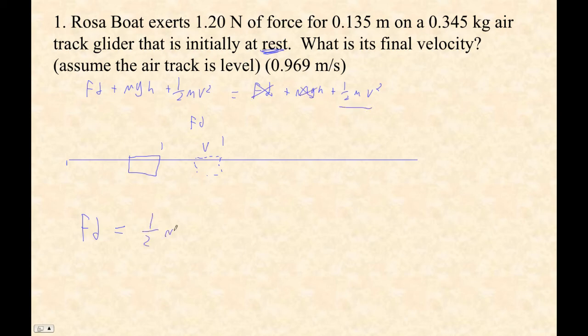Now we just plug numbers in, right? So 1.2 times 0.135 equals one-half times 0.345 times V squared. And this is a little bit tricky math.